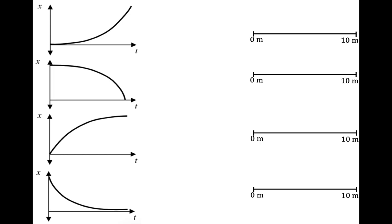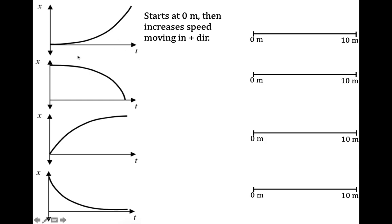For this video I'm going to show you how to draw motion maps for an object with a changing velocity. In the first example, the object starts at a position of zero meters and increases its speed. You can see the slope of the position versus time graph is getting steeper and steeper, and it's moving in a positive direction because the slope is positive.